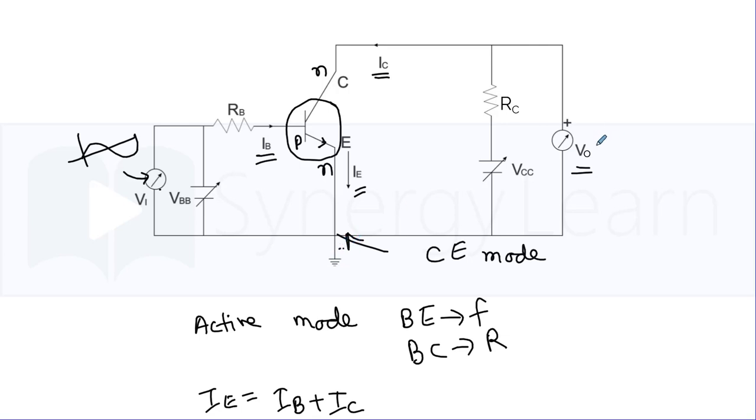The output voltage will be the collector voltage which we can see here as VCC minus IC×RC, because when the current flows in this direction, the voltage will decrease.